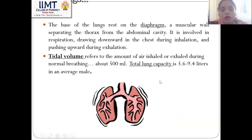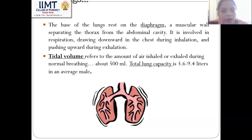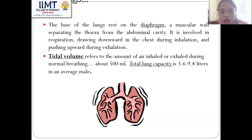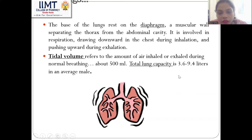There are some volumes we must know. First is tidal volume, which refers to the amount of air inhaled or exhaled during normal breathing — approximately 500 ml. The total lung capacity is 3.6 to 9.4 liters in an average male.